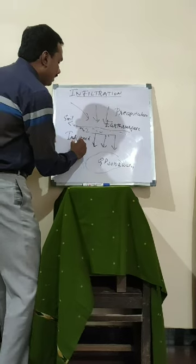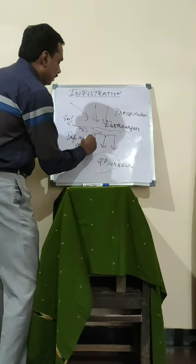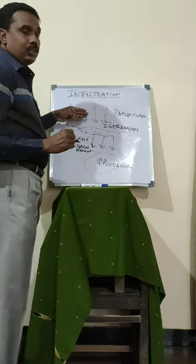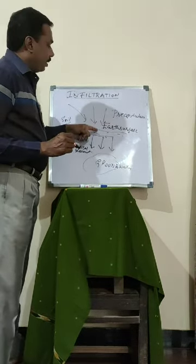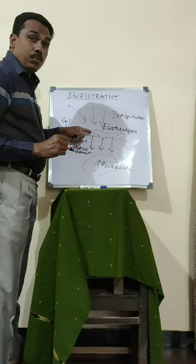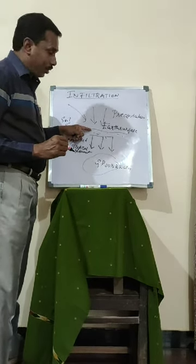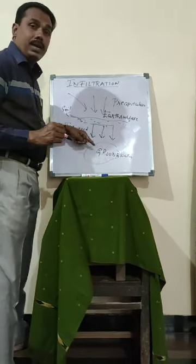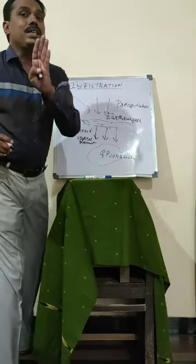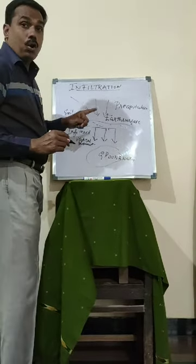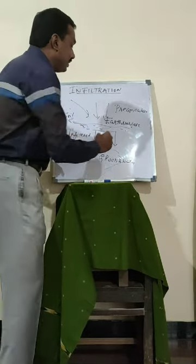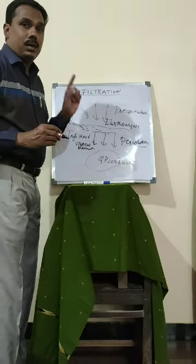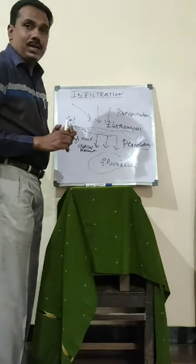This is called vertical movement. Initially, the precipitation takes place and reaches the Earth's surface. The maximum amount of water will be absorbed by the soil and that will be infiltrated downwards — that is vertical movement under the influence of gravity towards the groundwater. This is called infiltration. This is also called percolation. The movement downwards is also called percolation.